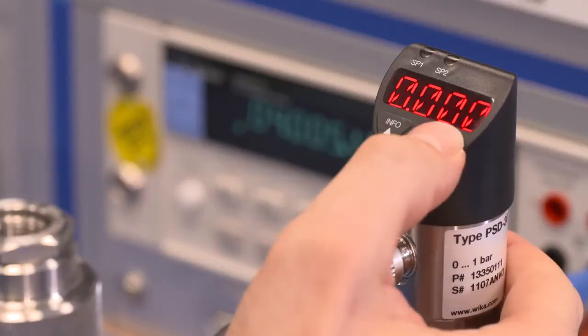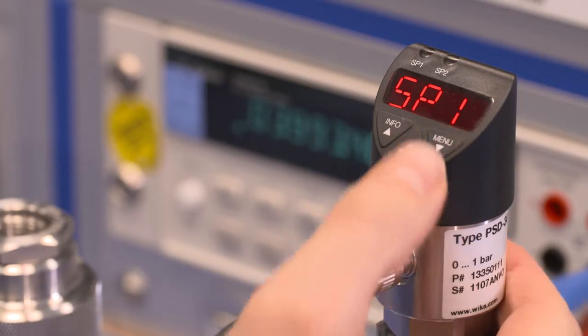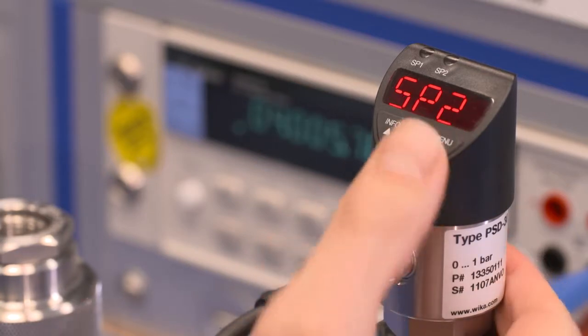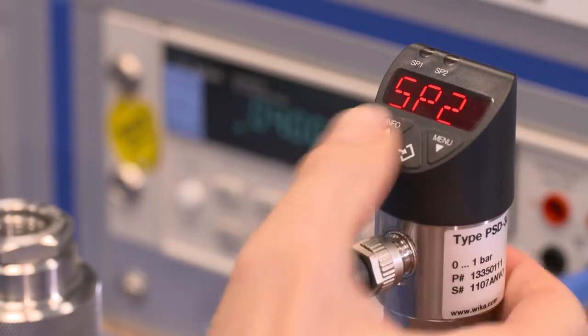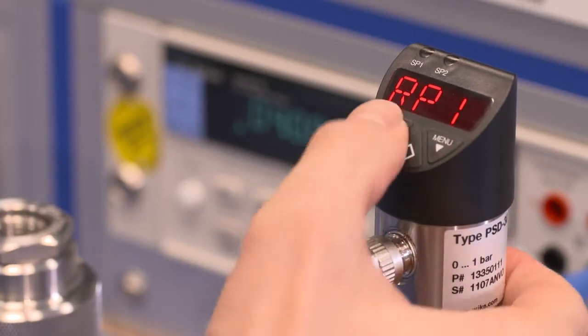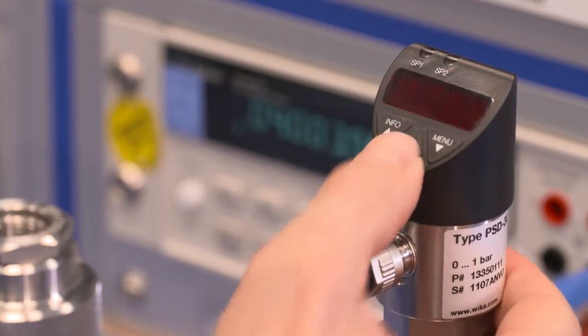To access the menu, hold the menu button down for a few seconds. Now we have accessed the first menu level and can navigate through the different parameters using the up and down buttons. With the enter button, the parameter is accessed.